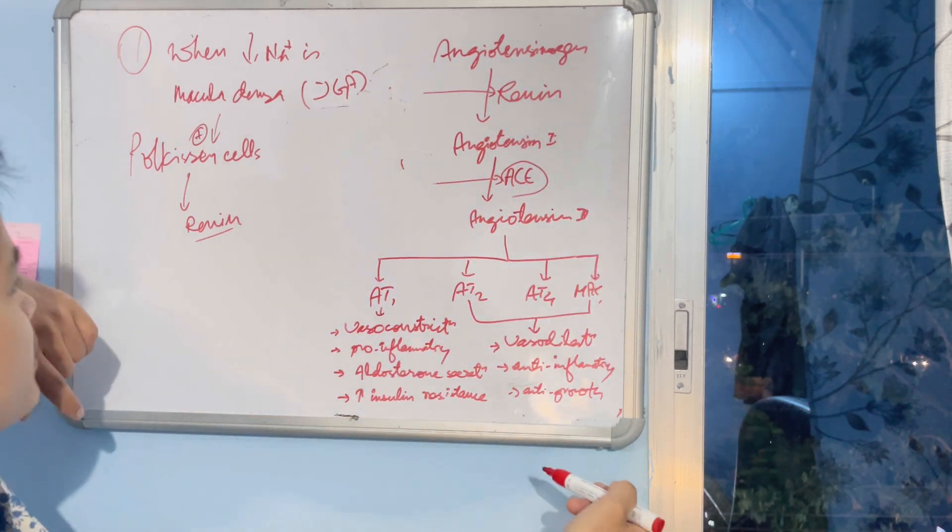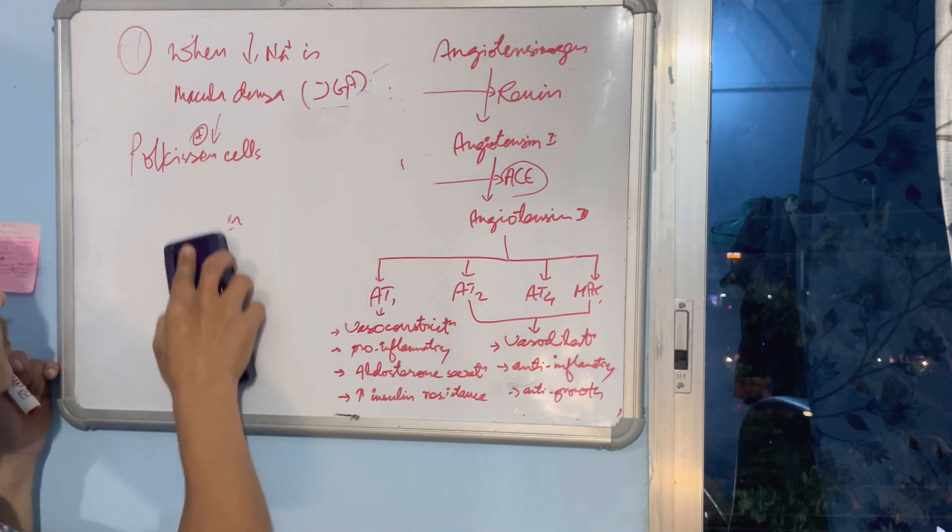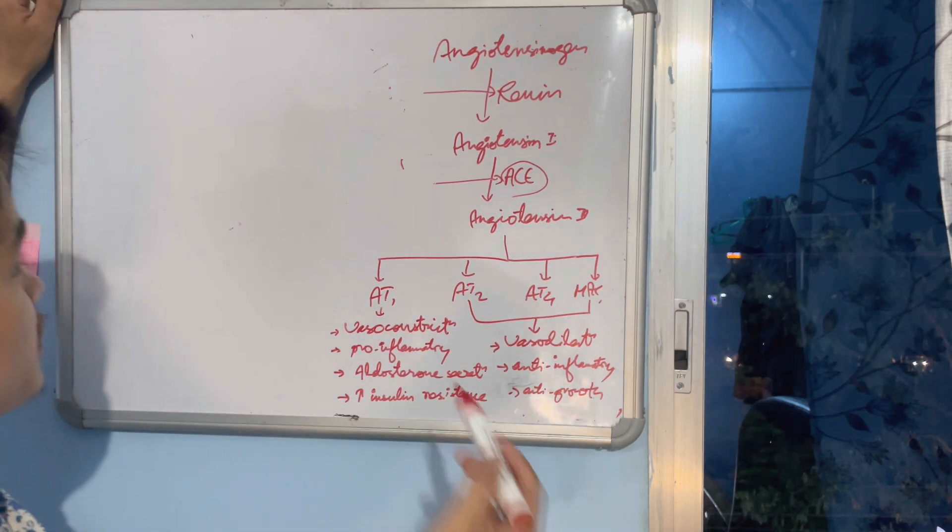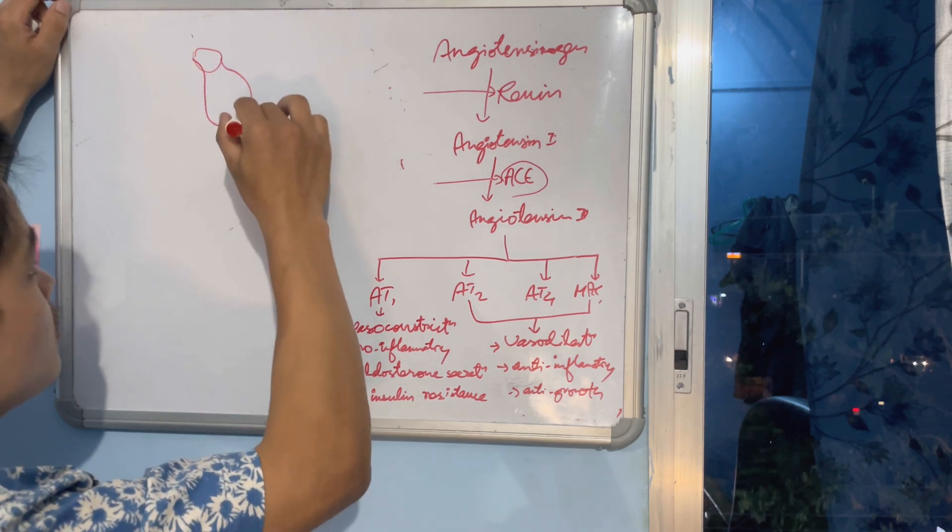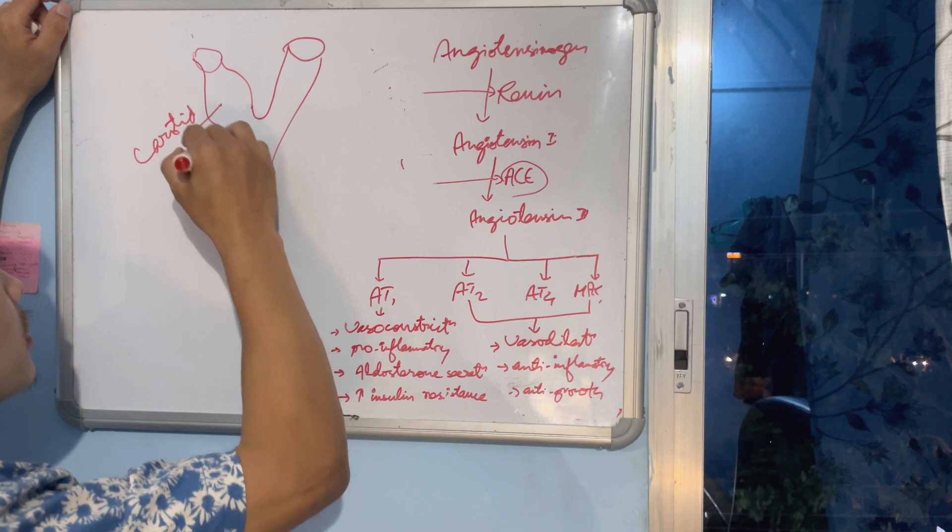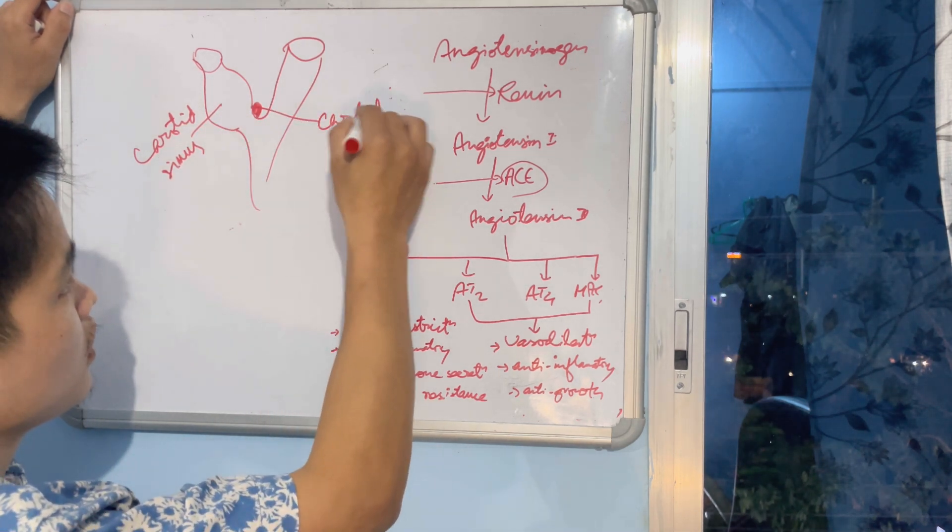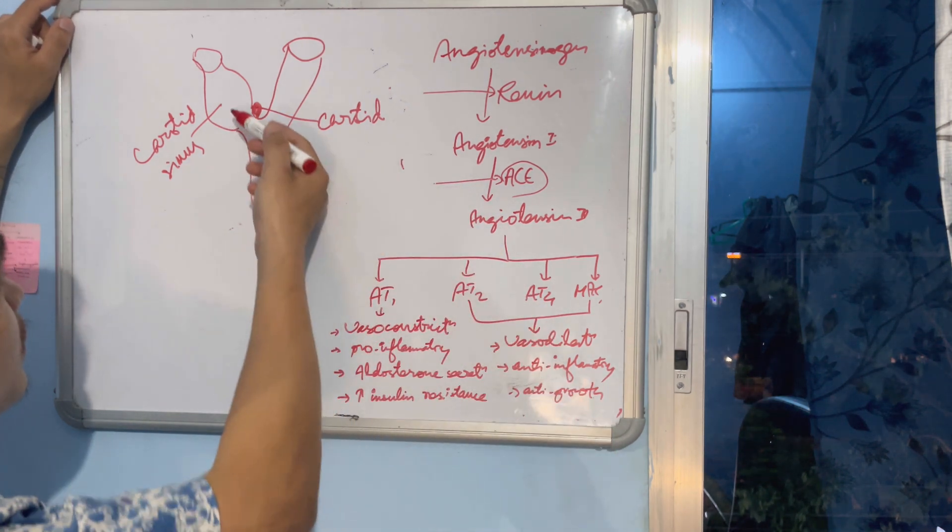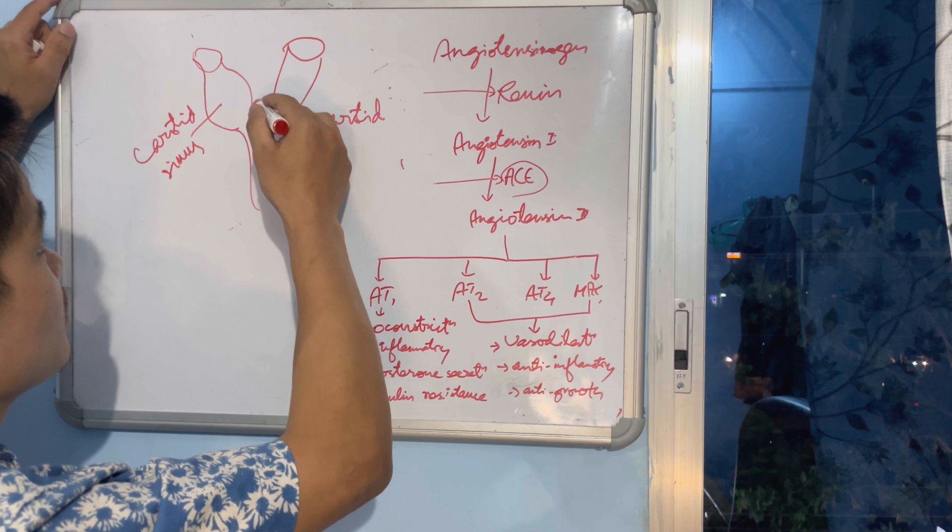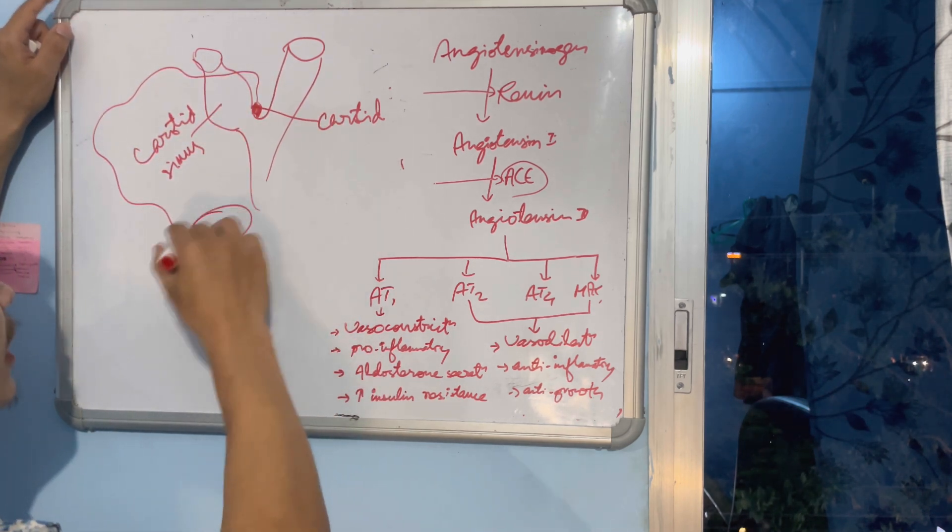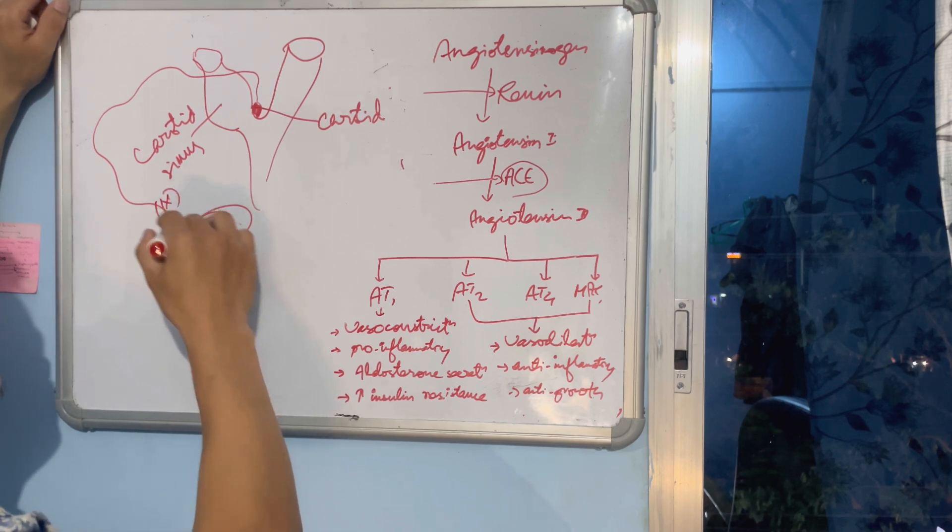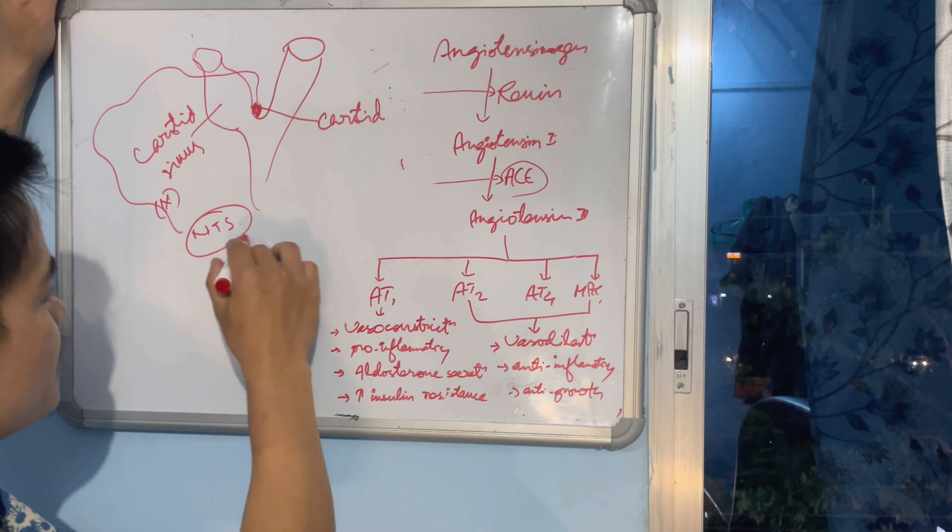Another condition is when your blood volume decreases. This is your carotid sinus - here your carotid bodies will be there. When your blood volume decreases, these carotid sinuses, carotid bodies, they detect that blood volume is decreased. Then they'll send information to NTS in medulla - nucleus tractus solitarius - through ninth nerve, that is glossopharyngeal nerve.